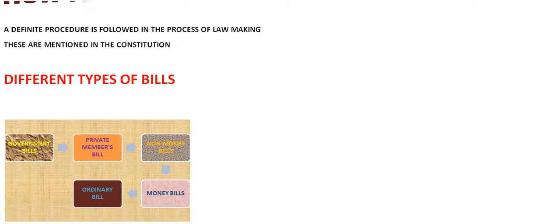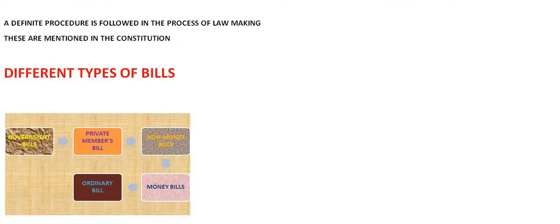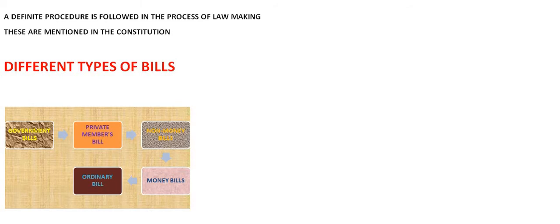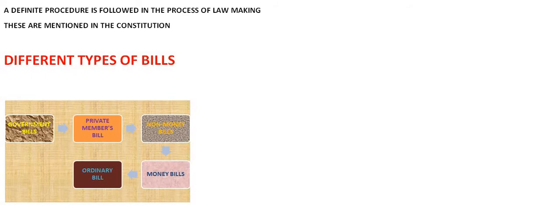First, you will understand how many types of bills are present. Government bills — the concerned minister or a government party member initiates the government bill. Private member bill — each individual is allowed to participate in elections, so if an individual wins and wants to initiate a bill, then it is a private member bill. Non-money bills and money bills — money bills are related to budget, finance, and expenditures. Then there are ordinary bills and money bills. Ordinary bills relate to amendments, policies, and procedures.